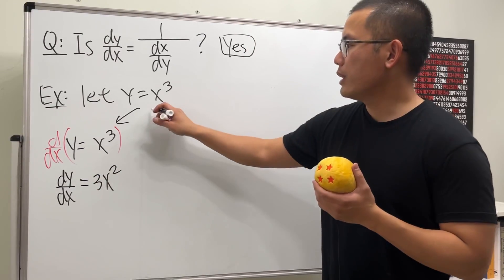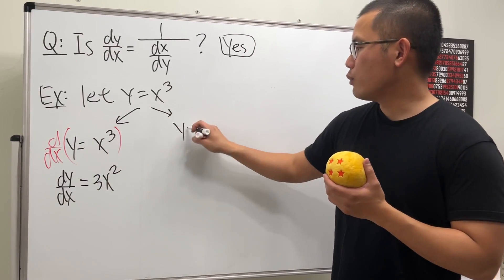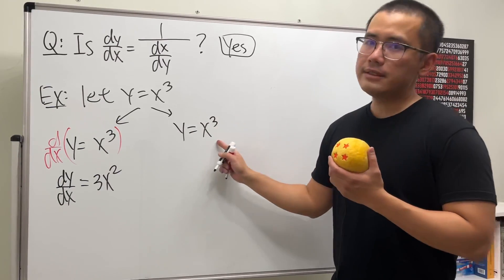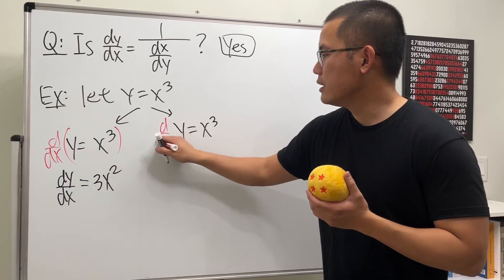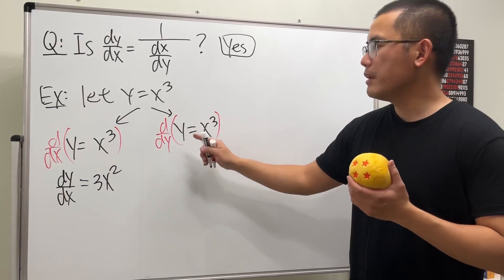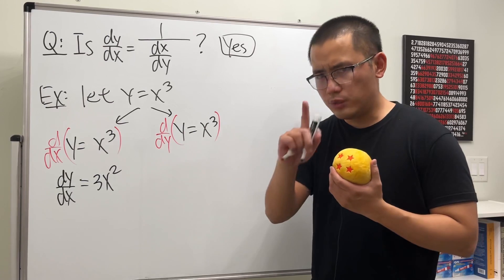We have y equals x to the third power, but this time we'll treat x as a function of y. We'll do implicit differentiation carefully. We do d/dy, and the derivative of y with respect to y equals one.